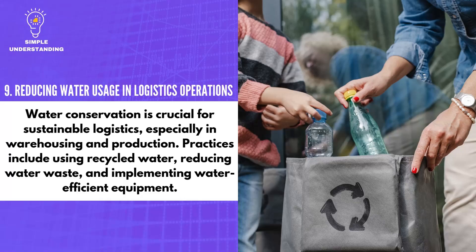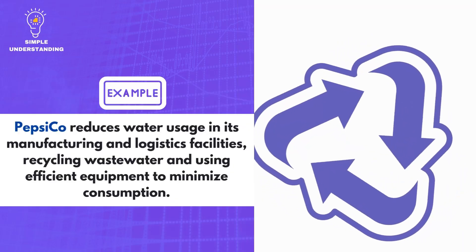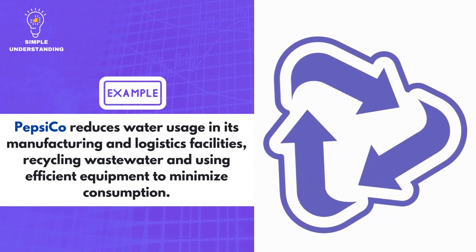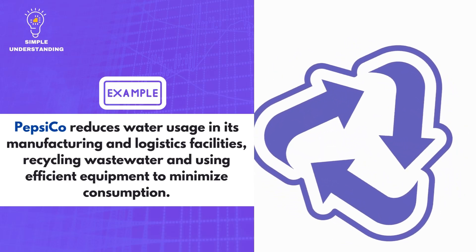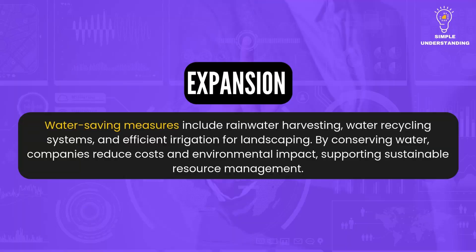9. Reducing Water Usage in Logistics Operations. Water conservation is crucial for sustainable logistics, especially in warehousing and production. Practices include using recycled water, reducing water waste, and implementing water-efficient equipment. PepsiCo reduces water usage in its manufacturing and logistics facilities, recycling wastewater and using efficient equipment to minimize consumption. Water-saving measures include rainwater harvesting, water recycling systems, and efficient irrigation for landscaping, reducing costs and environmental impact.